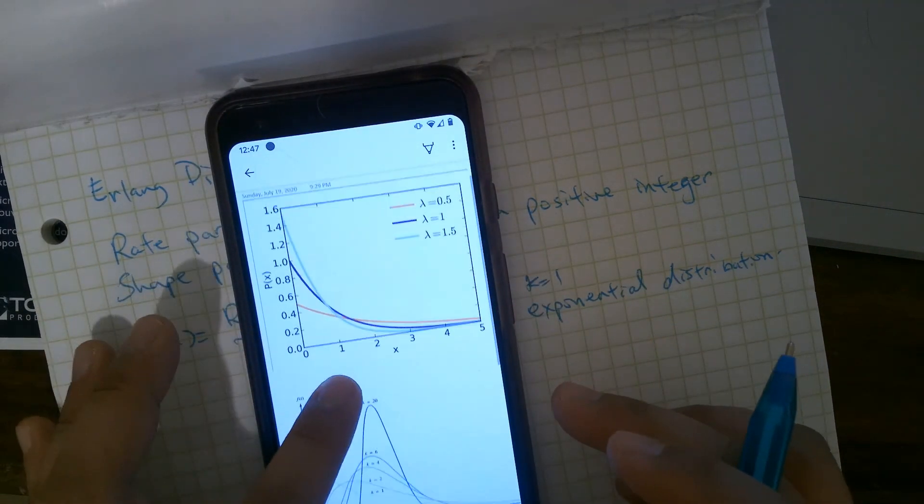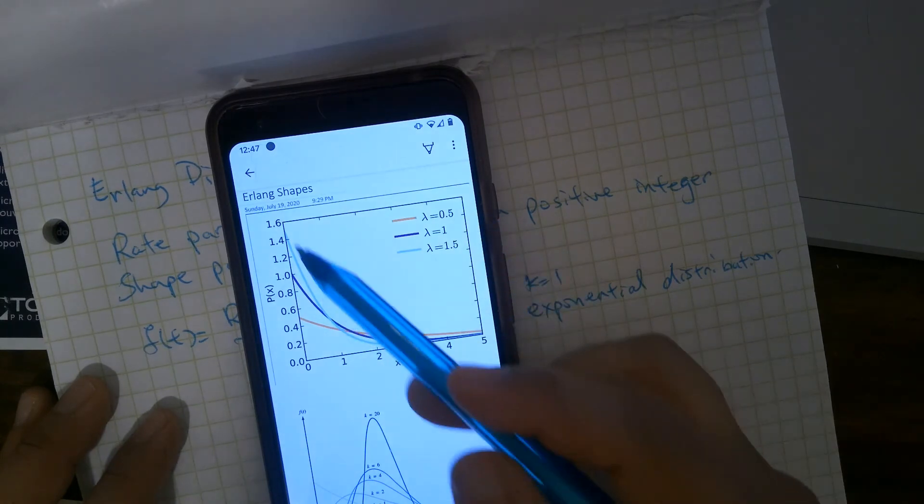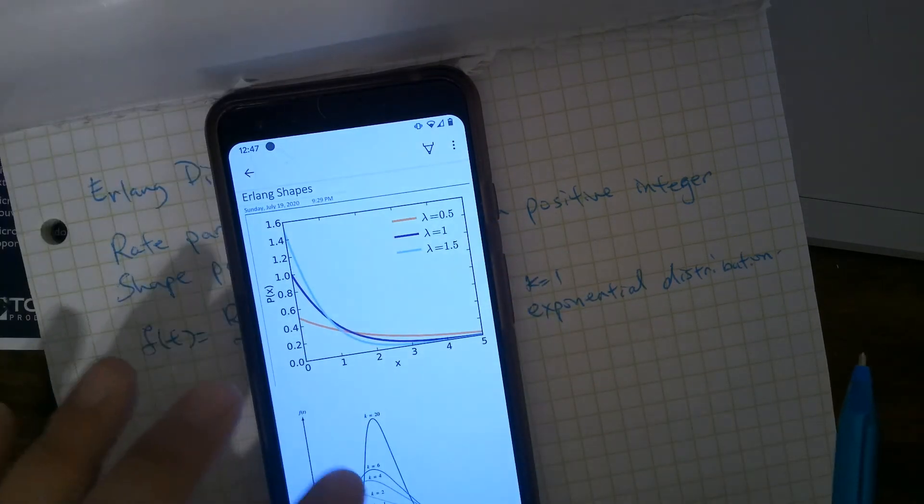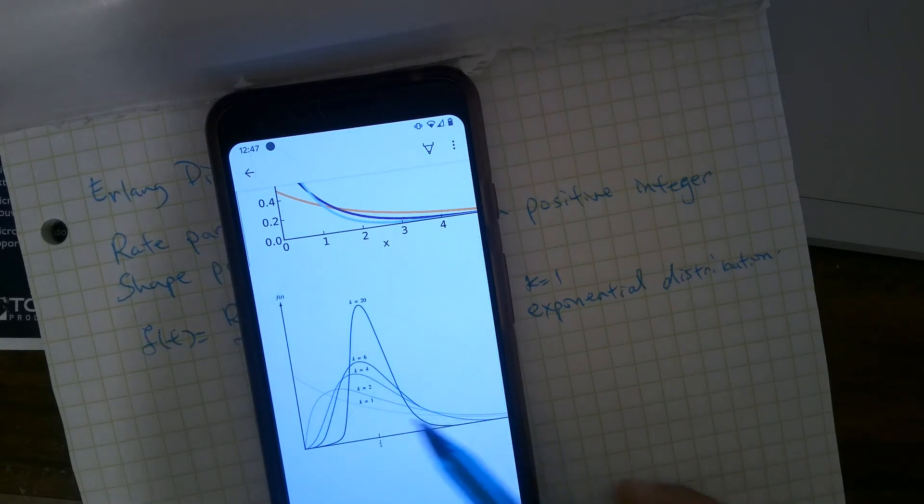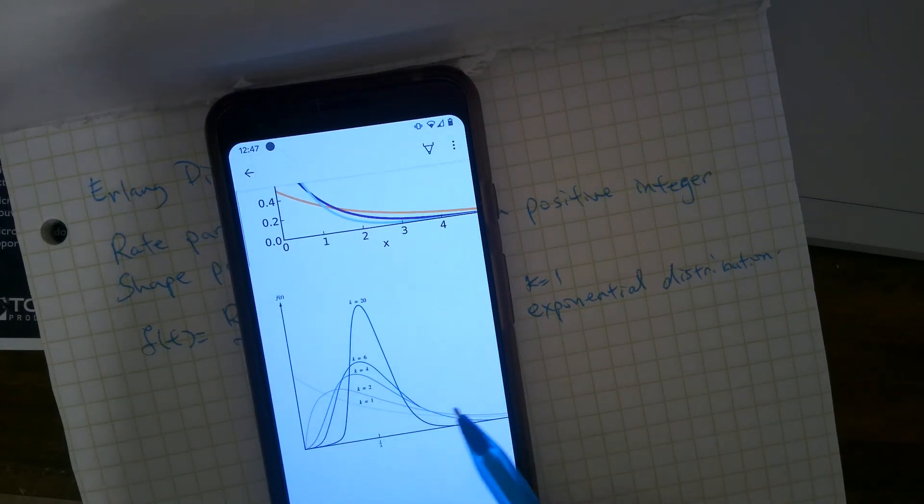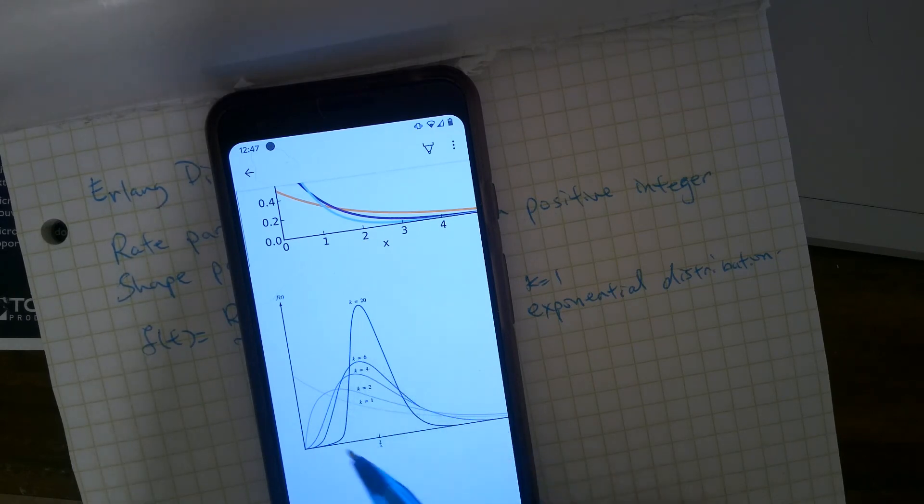Here's exponential distributions from before for different amounts of stretch. And then here's K equals 1 is still the same as exponential. And for other values of K, we start changing the shape of the graph. And this more closely resembles service.